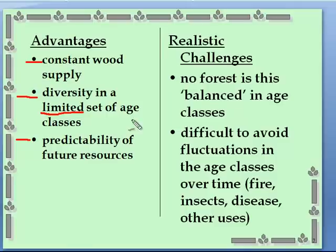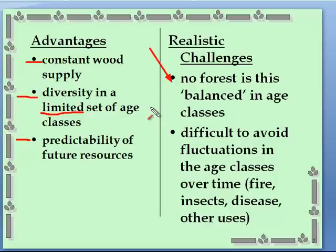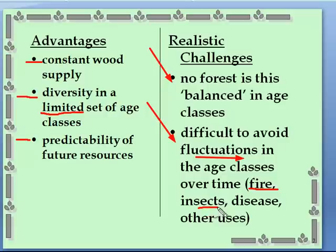Now let's get a touch of reality about the challenges. No forest is balanced in age classes. Traditionally in Canada, across all our provinces, most forests are on the older side. In Ontario and westward, forests have a lot of older age classes which go well beyond the time you would harvest them. This has created a lot of grief — mountain pine beetle, wildfires, and so on. Another challenge is that equal age classes all the way up to harvest age are difficult to maintain due to fluctuations from fire, insects, disease, and other uses of the forest.